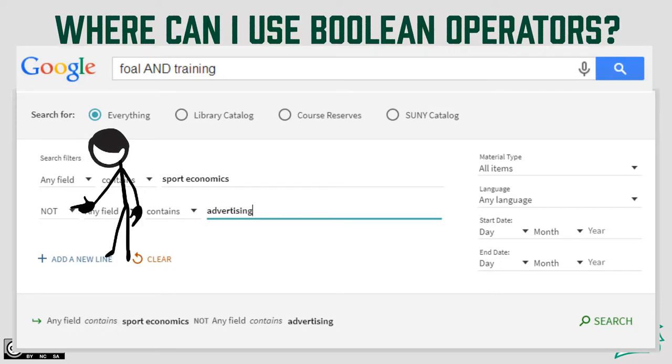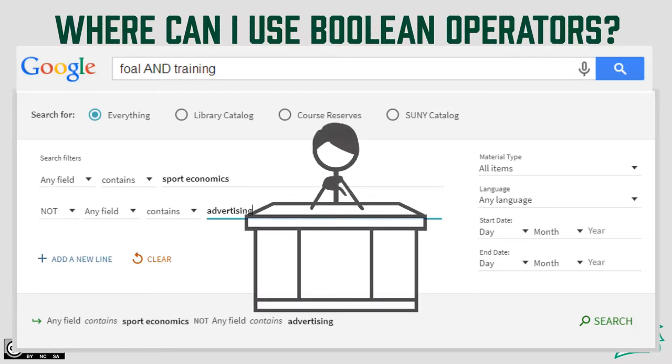They can be used when searching through the library catalog. They can be used when searching for articles through our library databases. In fact, some databases have Boolean operators built right in for you to use. By using Boolean operators, you can take more control over what you are searching for, and what is retrieved by your search no matter what platform you are using.